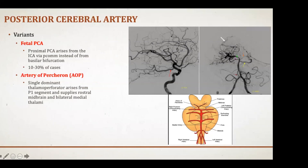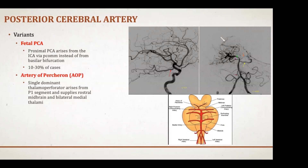On this lateral angiogram, you can see the ICA coming up, the ophthalmic artery going to the eye anteriorly, and a very prominent posterior communicating artery. In the fetal PCA variant, the PCA comes off the posterior communicating artery instead of the vertebral artery. This is an important variant to recognize, especially during aneurysm treatment.